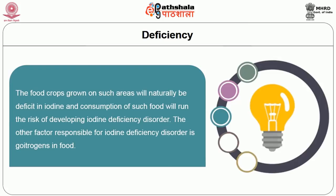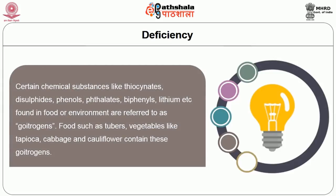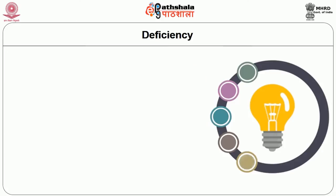Another factor responsible for iodine deficiency disorder is goitrogens in food. Certain chemical substances like thiocyanates, disulphides, phenols, phytates, biphenyls, lithium, etc., found in food or the environment are referred to as goitrogens. Foods such as tubers and vegetables like tapioca, cabbage and cauliflower contain these goitrogens. Certain cereals and millets like sorghum, finger millet, mustard and groundnuts also contain fair amounts. These goitrogens inhibit uptake of iodine by the thyroid gland, resulting in iodine deficiency disorder.